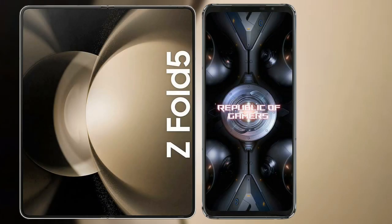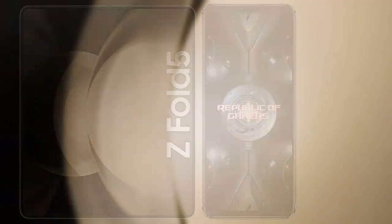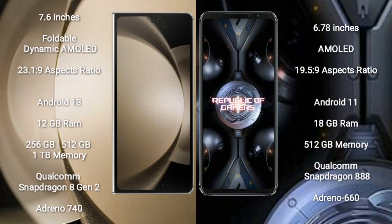I will compare the new Samsung Galaxy Z Fold 5 with Asus ROG Phone 5 Ultimate. Samsung Galaxy Z Fold 5 comes with a 7.6 inches foldable dynamic AMOLED display and aspect ratio 23.1:9. Asus ROG Phone 5 Ultimate has a 6.78 inches AMOLED display and aspect ratio 19.5:9.